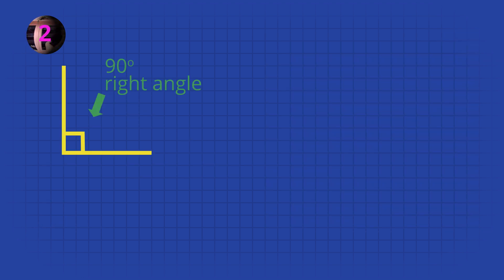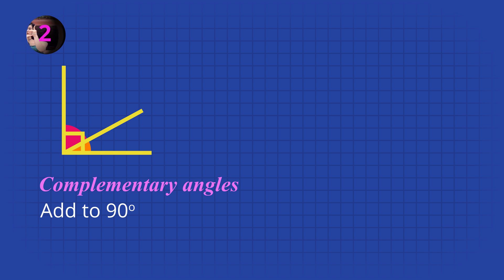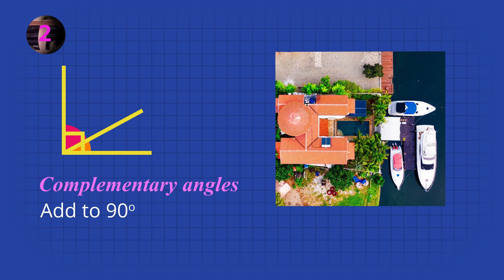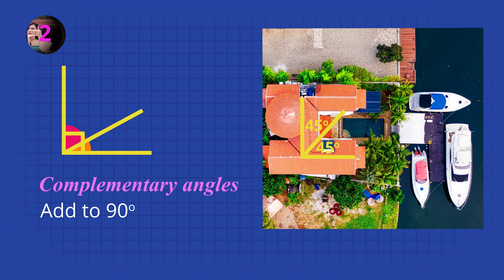An angle of 90 degrees in size is called a right angle. If we draw a line to divide that right angle into two angles, these angles together must add up to 90 degrees. These are called complementary angles. Here is an example of the corner of a rooftop. If one angle is 45 degrees, the other angle must be 45 degrees also because they must add up to 90 degrees.